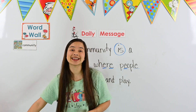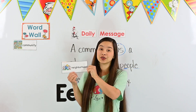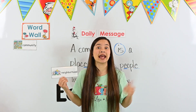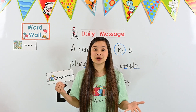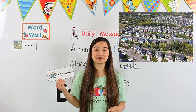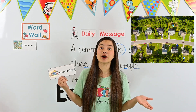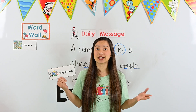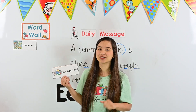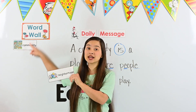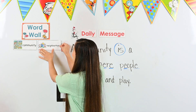Another word we're going to talk about today is 'neighborhood.' A neighborhood is the place where you live inside of a city. There can be many different neighborhoods in one big city — some with apartment complexes, some with lots of houses, and some with only a few houses. Just like communities, neighborhoods can be really big or really small. A neighborhood is a small area inside of the big community. Let's add the word 'neighborhood' to our word wall.